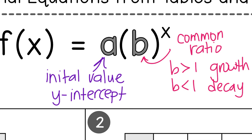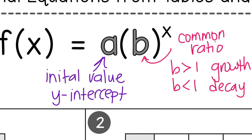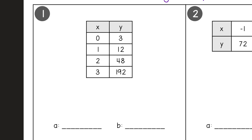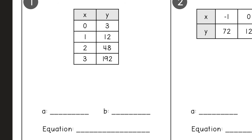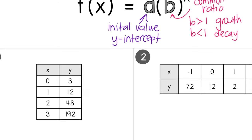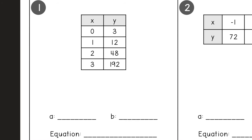Now let's look at our first example. I have a table here. To write the equation I need an A value and a B value — once I have those two numbers it's easy to write the equation. Since we already talked about how A is the y-intercept, how do you find the y-intercept of a table? It's pretty easy — you're looking for when x equals 0. On our table x equals 0 right there, so that is our y-intercept slash A value.